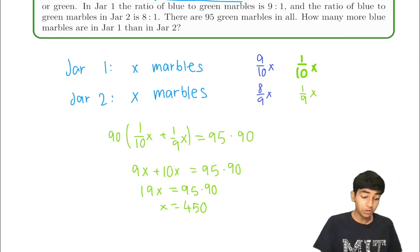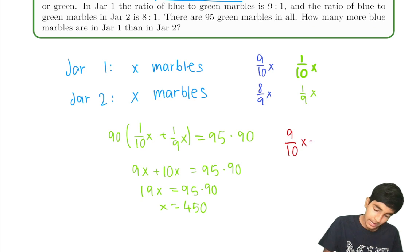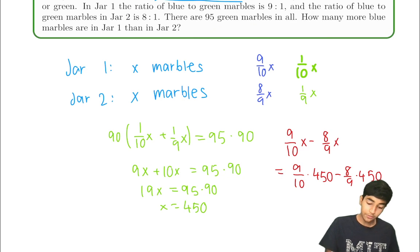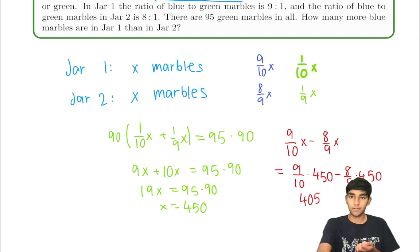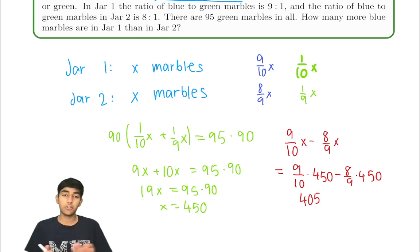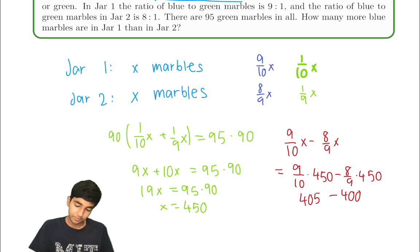But we're asked to find how many more blue marbles in jar one than jar two. That's nine tenths x minus eight ninths x which is nine tenths times 450 minus eight ninths times 450. That is 45 times nine. 45 times nine is going to be equal to, we can just do nine squared times five. So 45 times nine is just 405. And eight ninths times 450 is just eight times fifty, that's four hundred. It's just going to be equal to five. So five is the answer to this problem.